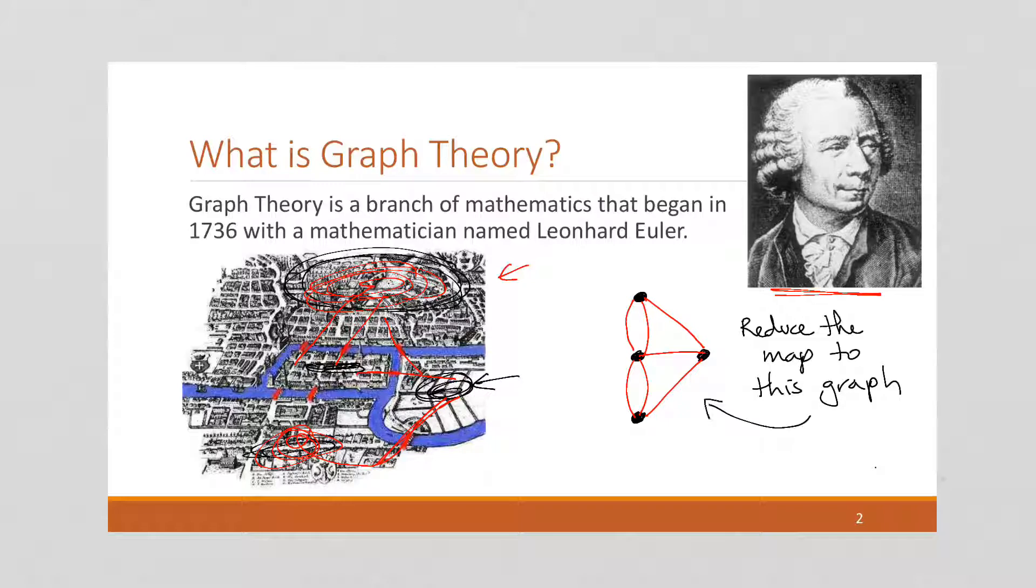And in mathematics or computer science, we talk about graph theory. This is what a graph looks like. It's made of a combination of vertices, which are these black points. So this is a vertex. Sometimes also called a node. And then the lines are edges. And this entire branch of mathematics is based on this kind of a concept of a graph.